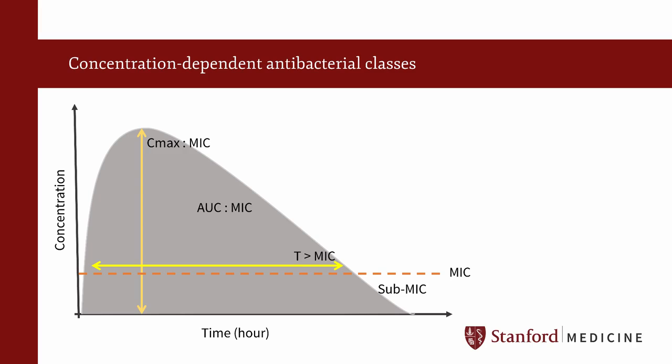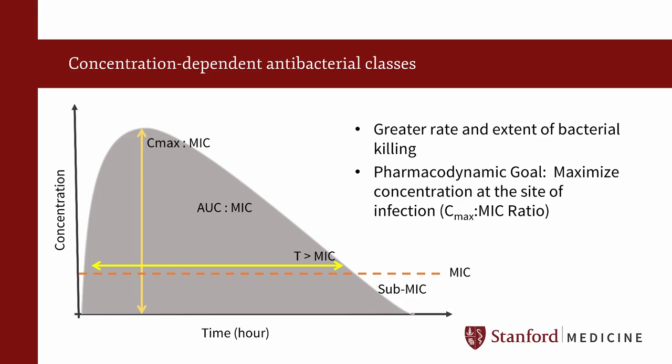For concentration-dependent antibiotics, the goal of this pattern of activity is to maximize the concentration and obtain the highest possible antimicrobial concentration at the site of infection, because higher drug concentration results in a greater rate and extent of microbial killing. The major pharmacodynamic parameter that correlates with clinical and bacteriologic efficacy of these drugs is the peak drug concentration to MIC ratio.